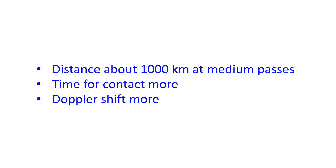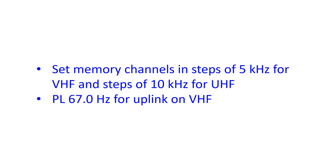The usual method is to store frequencies in memory with steps of the minimum tuning frequency step of your radio and switch memory channels when the signal goes out of frequency. Start with the higher frequency when the satellite appears above the horizon and tune down as it rises up.